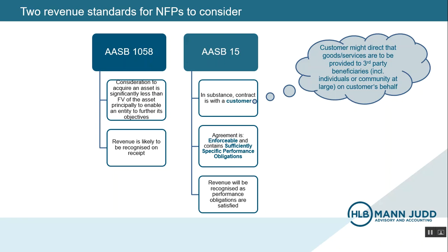To put that more simply, we're talking about the type of scenario where an NFP receives an asset, but the cost of receiving that asset is less than the asset's fair value. Such a scenario usually occurs where an asset is provided to help an NFP to further its objectives. Generally speaking, when accounting under AASB 1058, income tends to be recognized on receipt. There are however some exceptions, the most significant of which being capital grants.